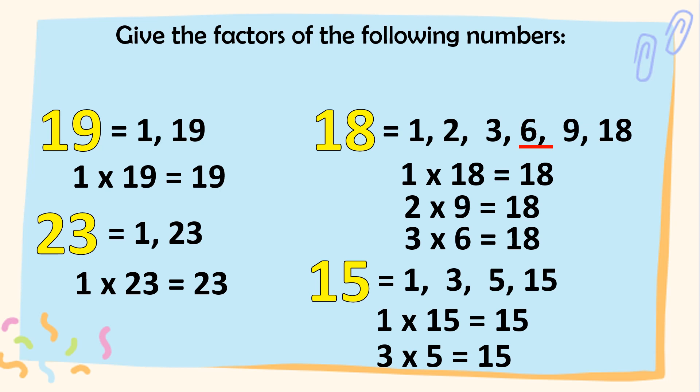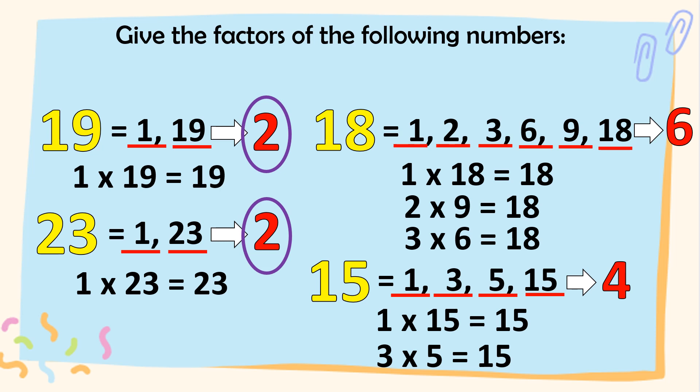Now, kung bibilangin natin ang mga factors, ilan kaya ang factors ng bawat numbers? Sa 19, ilang factors meron ito? Tama. We have 1, 2. How about 18? We have 1, 2, 3, 4, 5, at 6. So, meron ang 6 factors ang 18. How about 23? We have 1, 2. And sa 15, meron ang 1, 2, 3, at 4 factors. Now, kung inyong mapapansin, sa 19 at 23, pareha silang may 2 factors. Samantalang ang 18 at 15 ay meron 2 or more factors. Ang 19 at 23 ay halimbawa ng tinatawag nating prime numbers. At ang 18 at 15 ay tinatawag nating composite number.